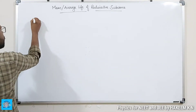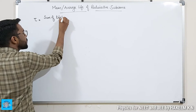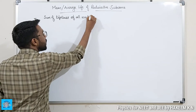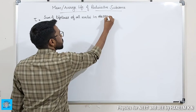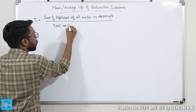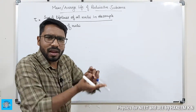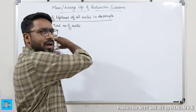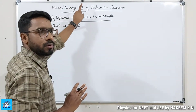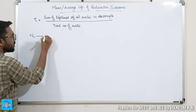Average life or mean life tau is equal to the sum of lifetimes of all nuclei in the sample divided by the total number of nuclei present in the sample. We need to find average life or mean life. N₀ is the initial number of nuclei.